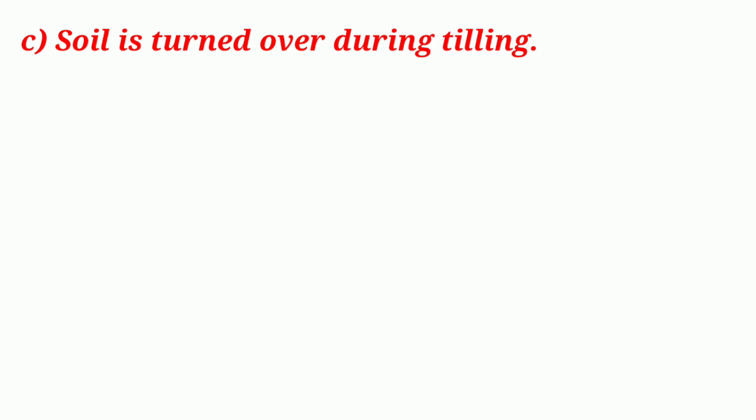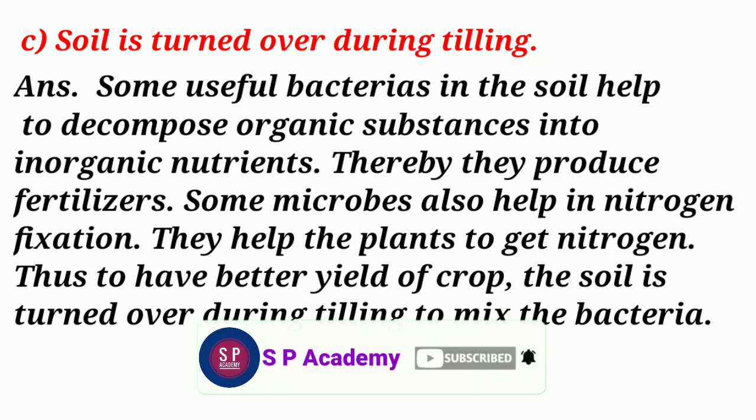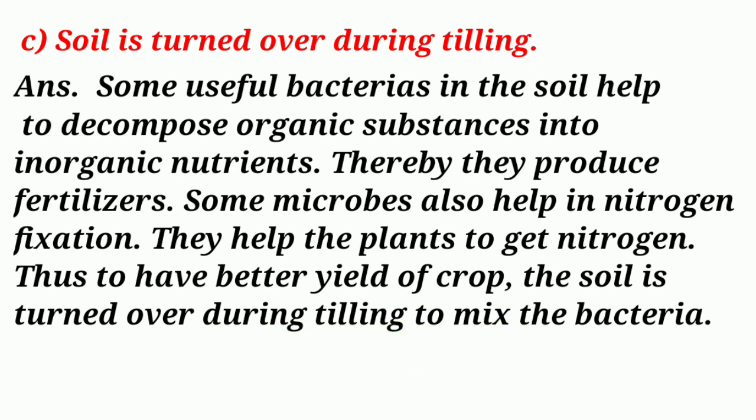Question C. Soil is turned over during tilling. Answer: Some useful bacteria in the soil help to decompose organic substances into inorganic nutrients. Thereby they produce fertilizers. Some microbes also help in nitrogen fixation. They help the plants to get nitrogen. Thus, to have better yield of crop, the soil is turned over during tilling to mix the bacteria.